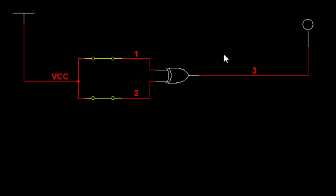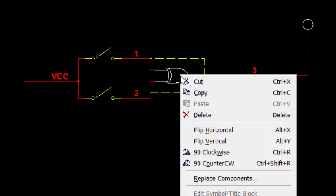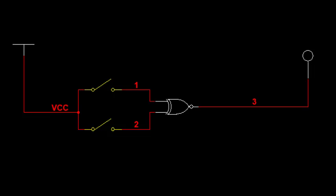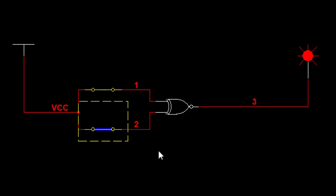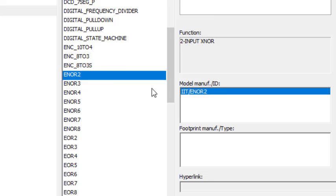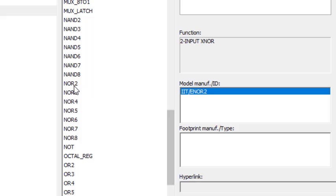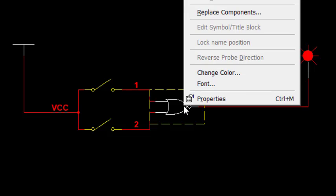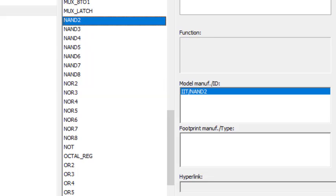In the same way we can check the XNOR gate — replace the component with XNOR and run: 0 0 is 1; 1 0 is 0; 0 1 is 0; and 1 1 is 1. That is how the XNOR gate works. Similarly we check the NOR gate — NOR2: 0 0 is 1; 1 0 is 0; 0 1 is 0; and 1 1 is 0.